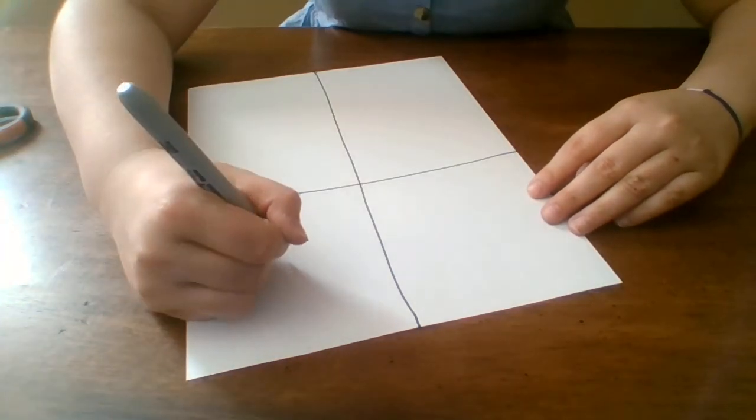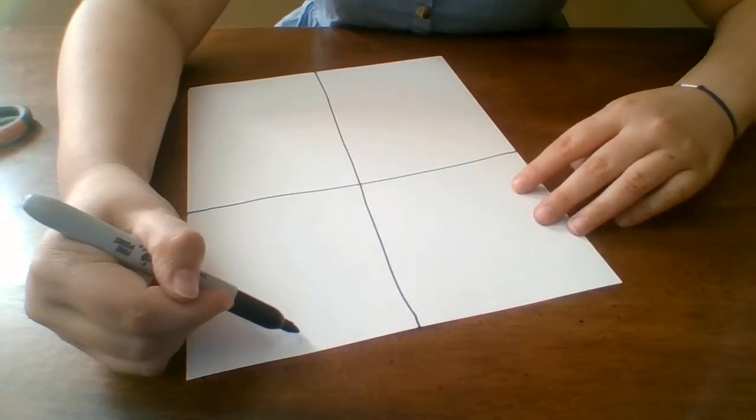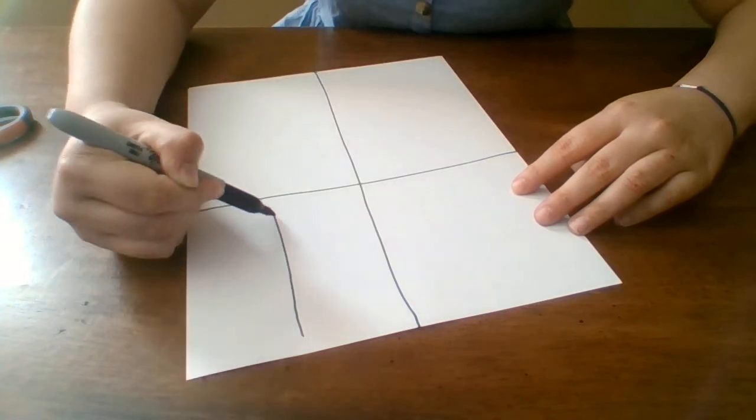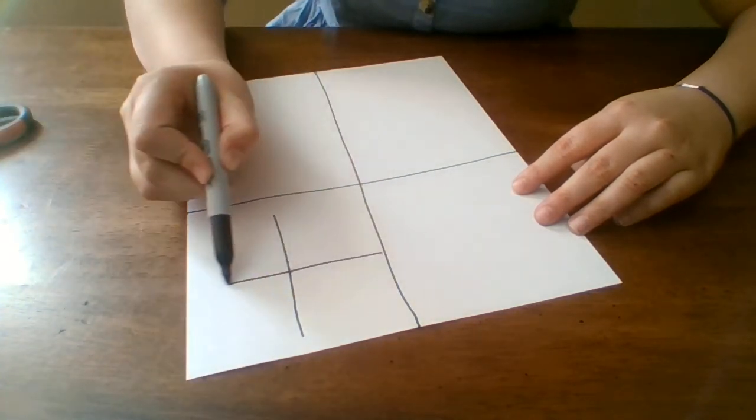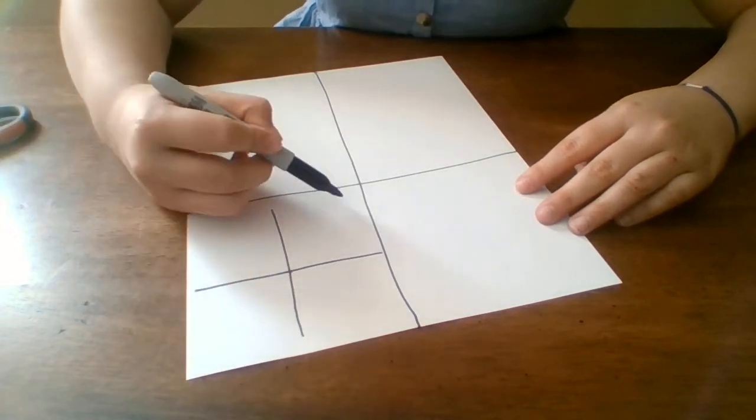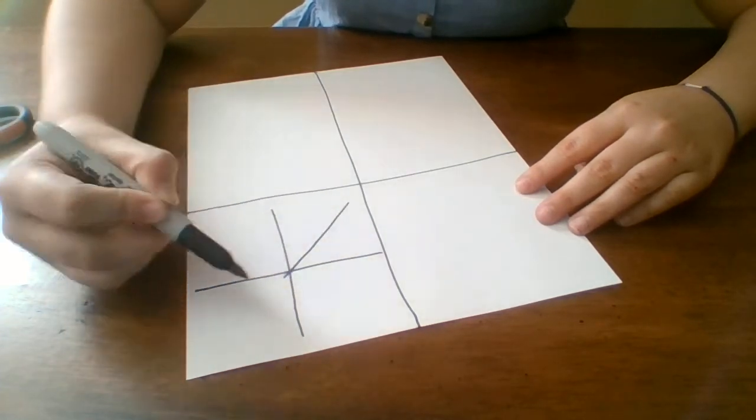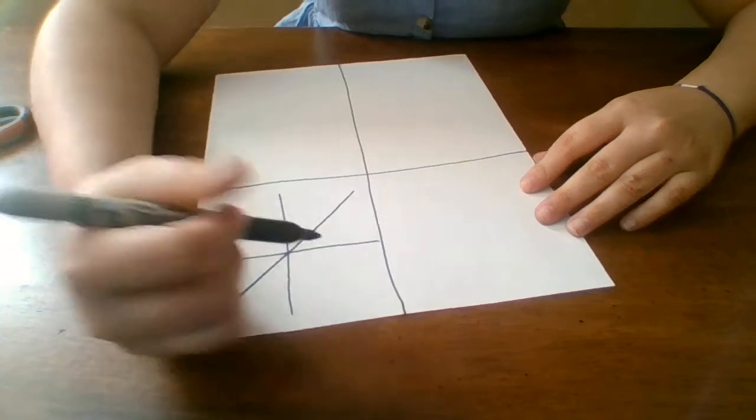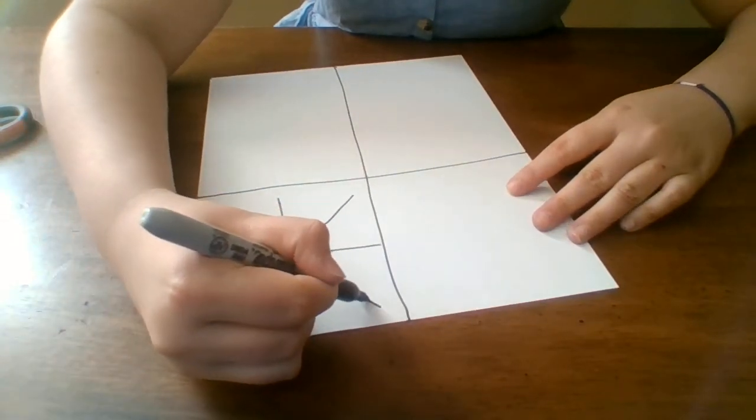The first one I'm going to start off with is a spider web. So what you're going to do is you're going to make a plus sign and then you're going to have lines going through it to make it kind of like a snowflake.